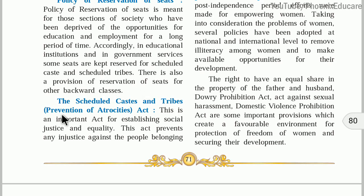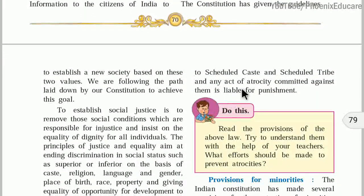Scheduled Caste and Scheduled Tribes Prevention of Atrocities Act is an important act for establishing social justice and equality. This act prevents any injustice against people belonging to Scheduled Caste and Scheduled Tribes, and any act of atrocity committed against them is liable to punishment. If someone says something wrong on the basis of caste against SC/ST people, they will be punished. To protect people from Scheduled Caste and Scheduled Tribes, we have made a provision in the constitution — the Scheduled Caste and Scheduled Tribes Prevention of Atrocities Act.